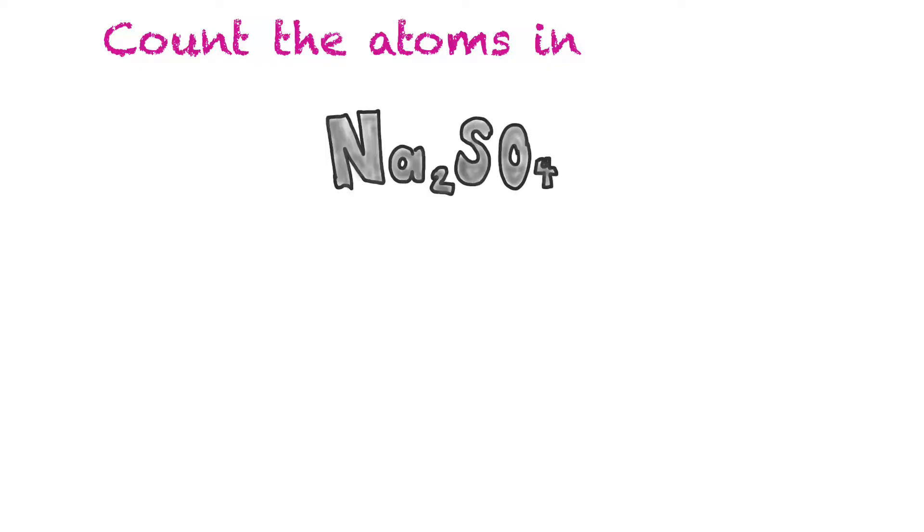Here's another example: Na2SO4. Every time there's a new capital letter, we know that's another element. This lowercase 'a' is not a separate element because it's connected to the N, so Na is sodium and there's a two there. S is sulfur and there's one, and then O is oxygen and there's a subscript four, so there's four oxygens. We've added up all those: two plus one plus four is seven atoms.